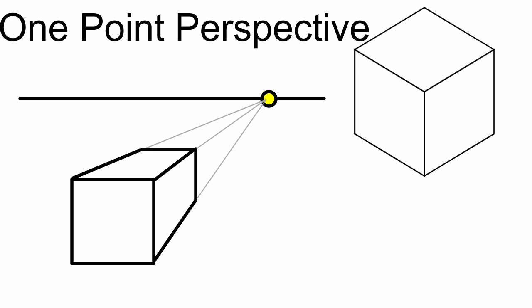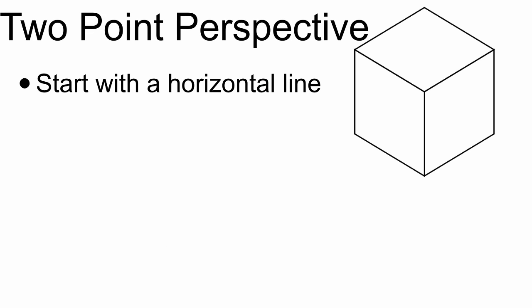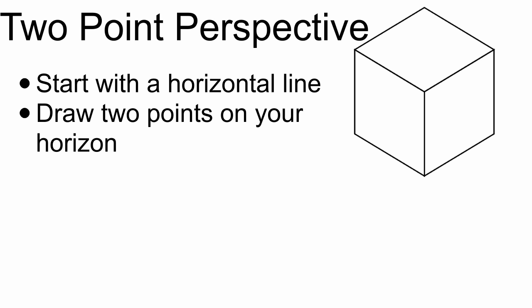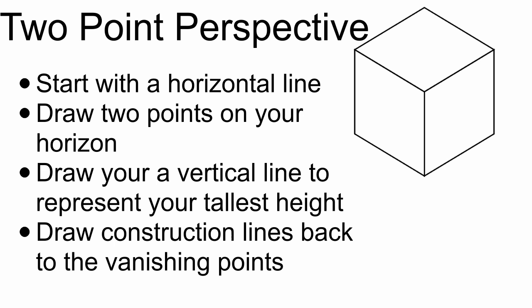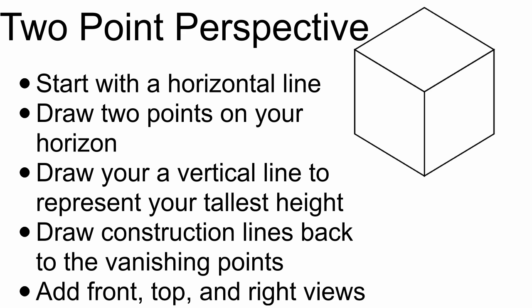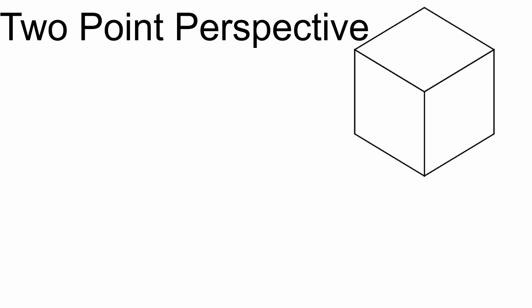So let's take a look at a two-point perspective and see how that works. Again, you always start with a horizontal horizon line. Instead of one point, with a two-point perspective you're going to draw two vanishing points on your horizon. From there, you draw a vertical line that represents your tallest height, and that vertical line should be a construction line to start. From there, you draw construction lines back to both vanishing points and complete your front, top, and right views. Let's draw it now.